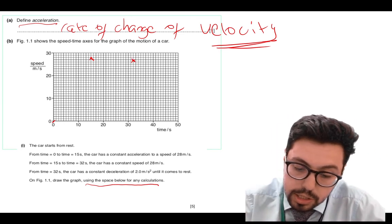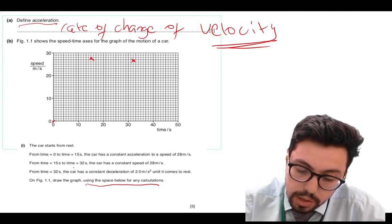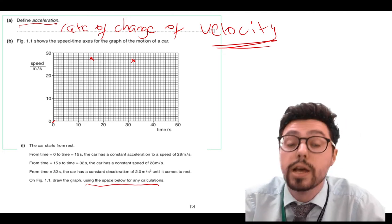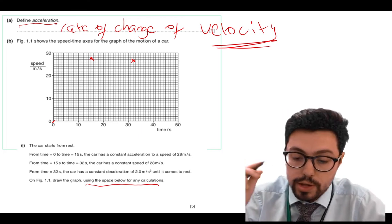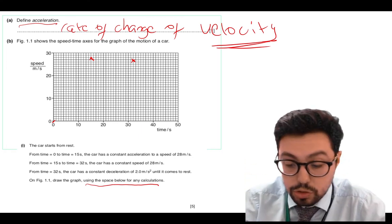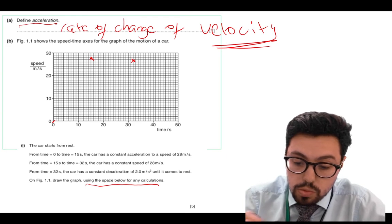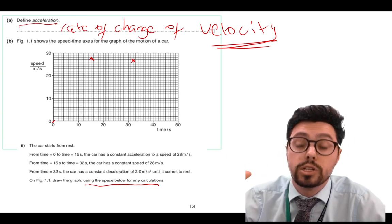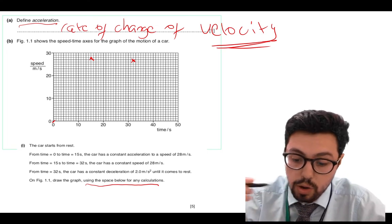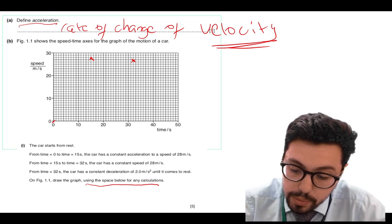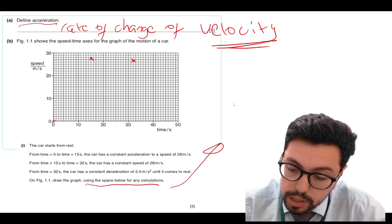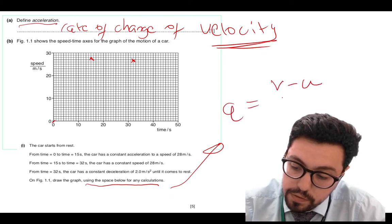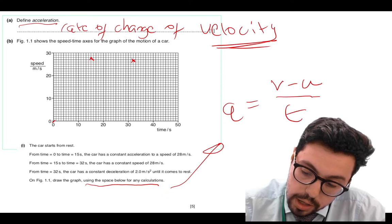The final bit: from time 32, the car has a constant deceleration of 2 metres per second squared until it comes to rest. So I know it's going to be a straight line down to 0, but I don't know at what time it's going to reach 0 metres per second. So I need to work that out using the equation: acceleration equals change in velocity (V minus U) over time.